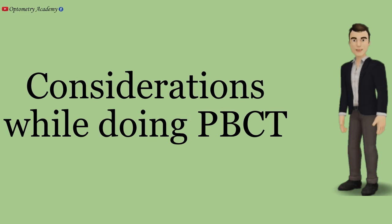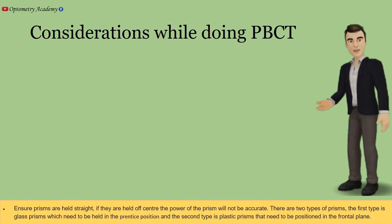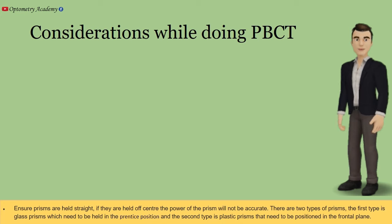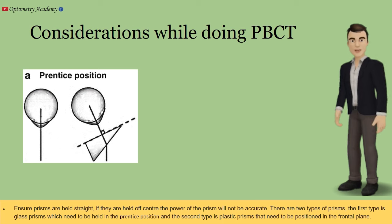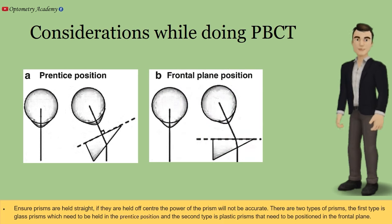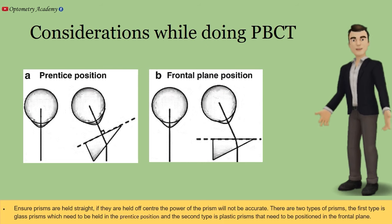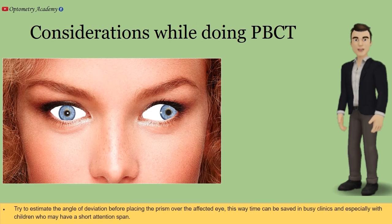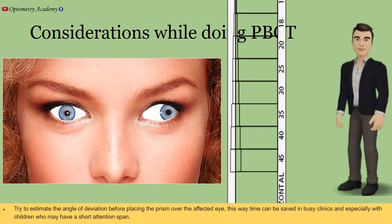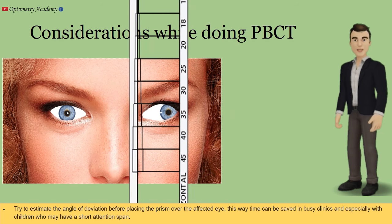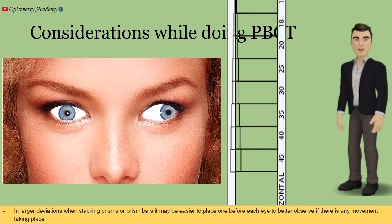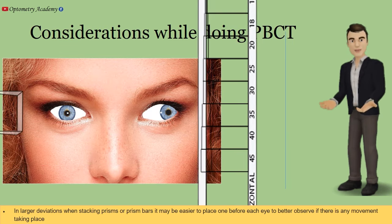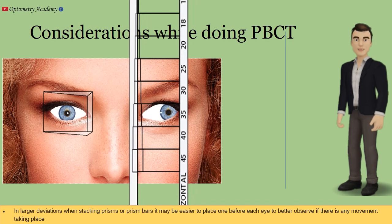Ensure prisms are held straight — if they are held off-center, the power of the prism will not be accurate. There are two types of prisms: glass prisms, which need to be held in the apex position, and plastic prisms, which need to be positioned in the frontal plane. Try to estimate the angle of deviation before placing the prism over the affected eye, as this saves time in busy clinics, especially with children who may have a short attention span. In larger deviations when stacking prisms, it may be easier to place one before each eye to better observe if there is any movement taking place.